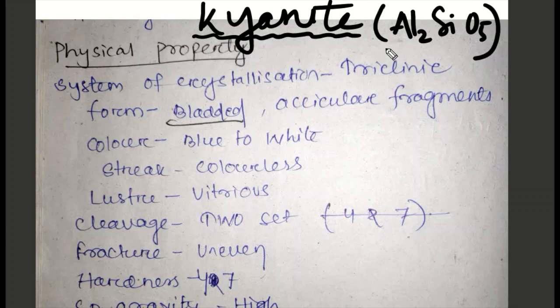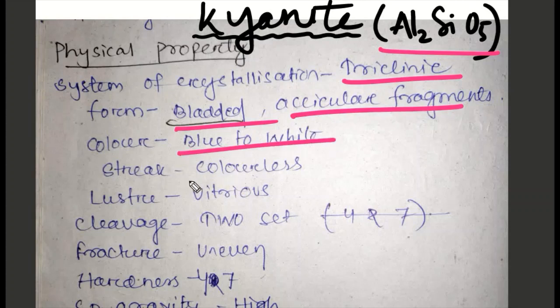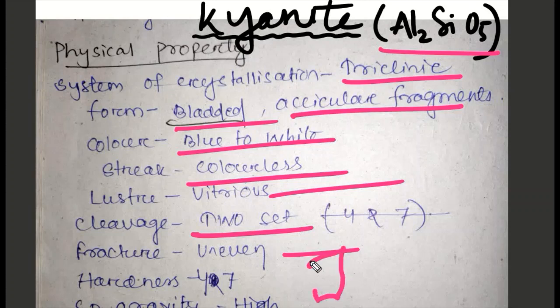Kyanite has composition Al2SiO5. Physical property: System of crystallization is triclinic. Form is bladed, acicular fragments. Color blue to white. Streak colorless. Luster vitreous. Cleavage 2-set. Fracture uneven. Hardness 4 and 7. Characteristic property: Hardness along cleavage is 4 to 5, but across cleavage is 7.